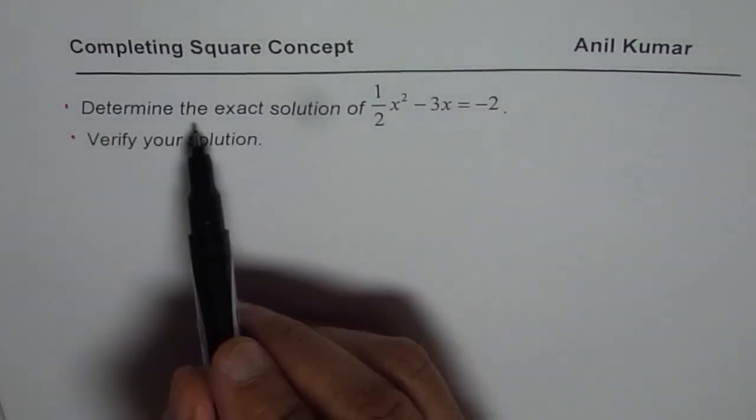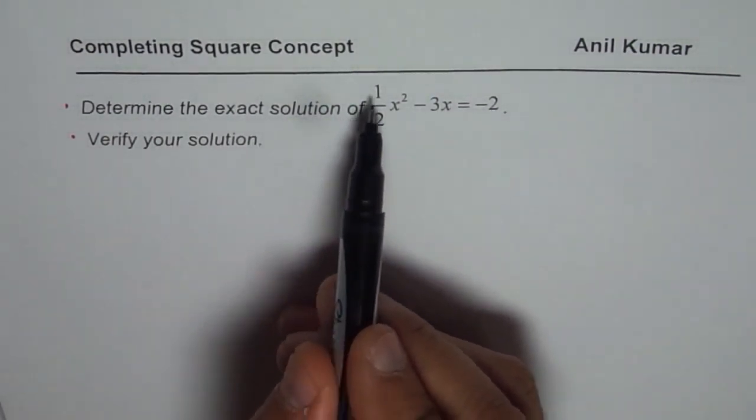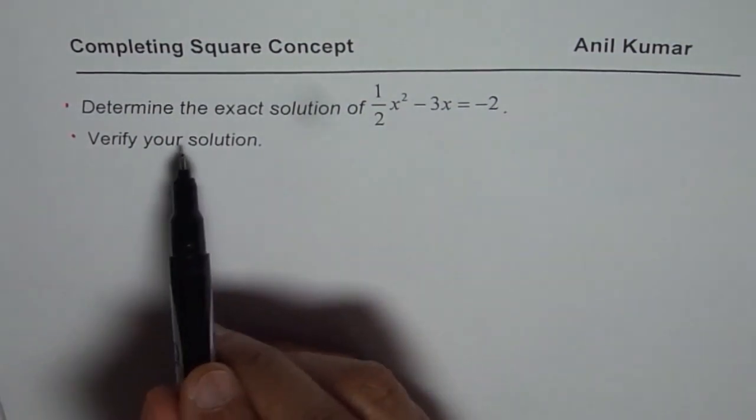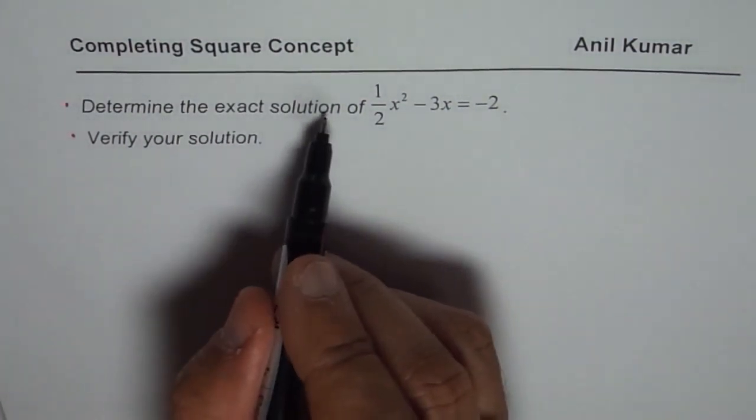Question is determine the exact solution of half x square minus 3x equals to minus 2 and verify your solution. So let's first find the solution.